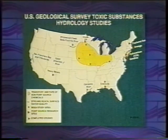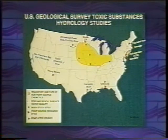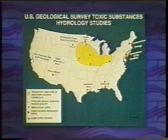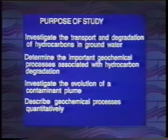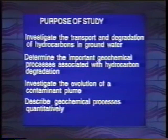The two sites I'm going to talk about today are in north-central Minnesota — the crude oil spill site — and a hydrocarbon spill site where gasoline contaminated a carbon aquifer in the Atlantic Coastal Plain called the Galloway site. The purpose of this study was to investigate the transport and degradation of hydrocarbons in groundwater, determine the important geochemical processes associated with hydrocarbon degradation, investigate the evolution of a contaminant plume, and describe these geochemical processes quantitatively.